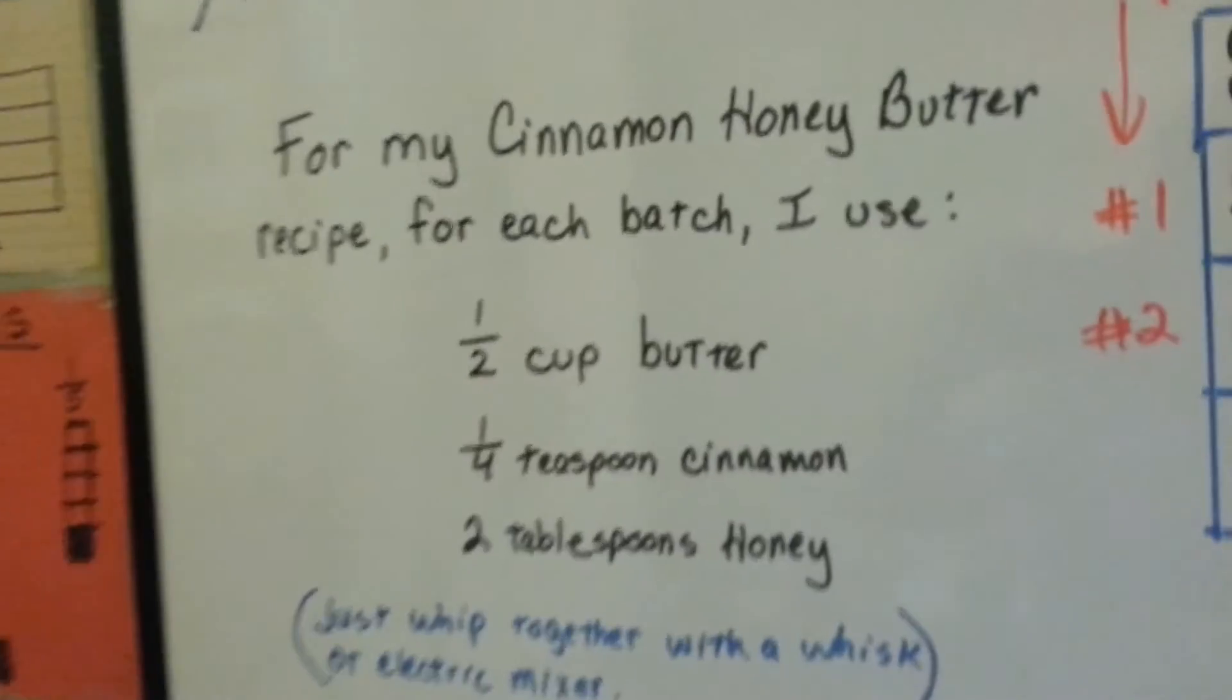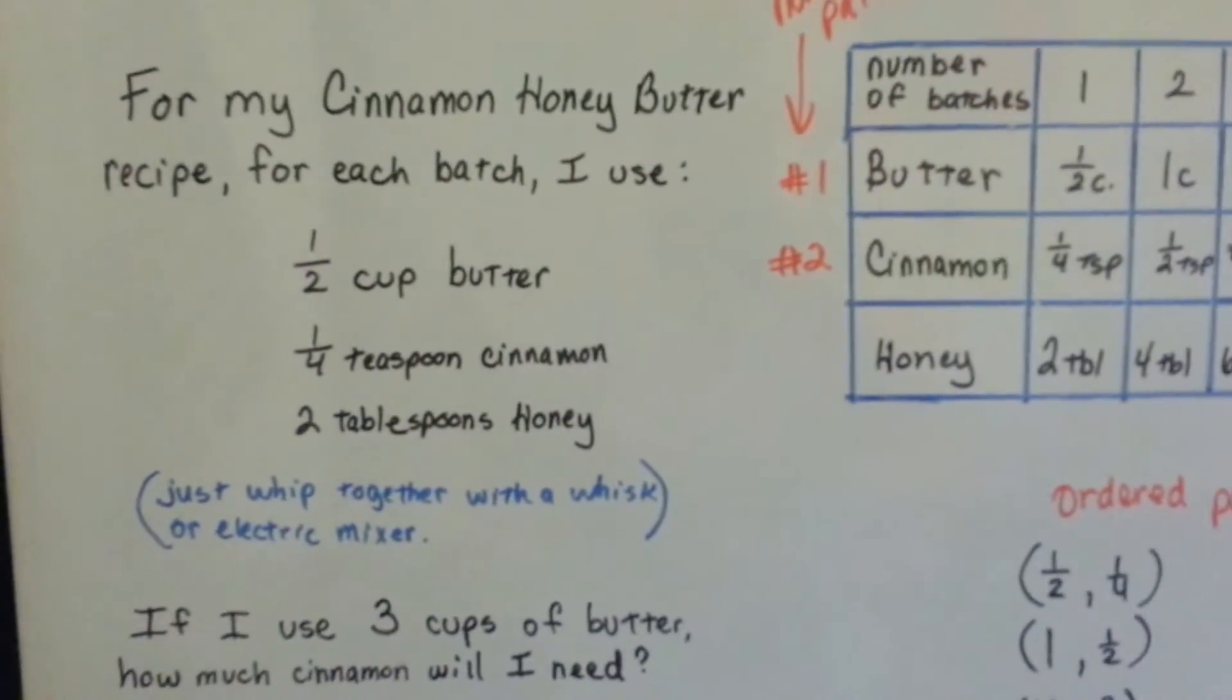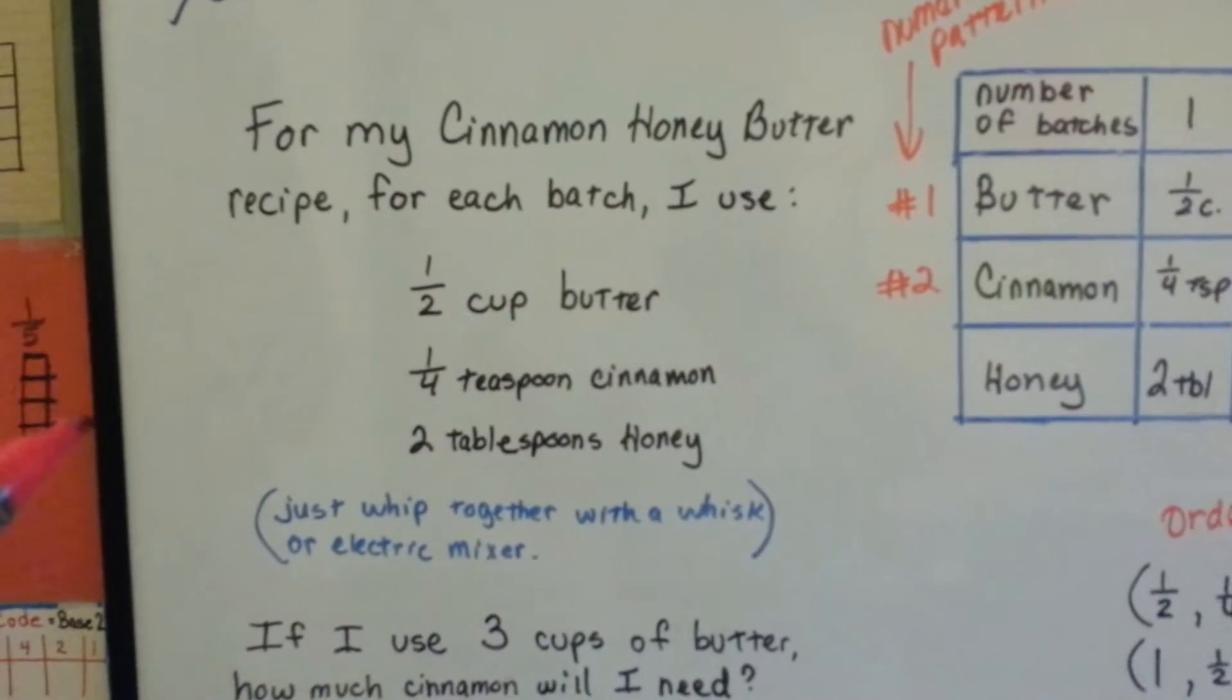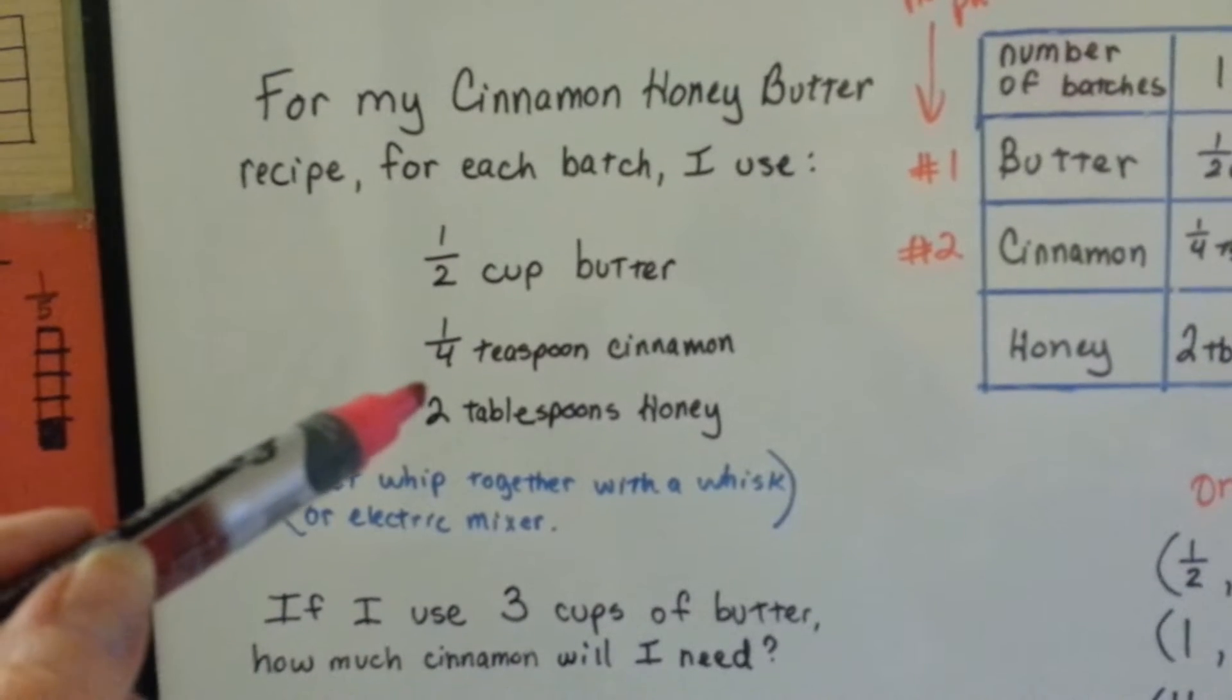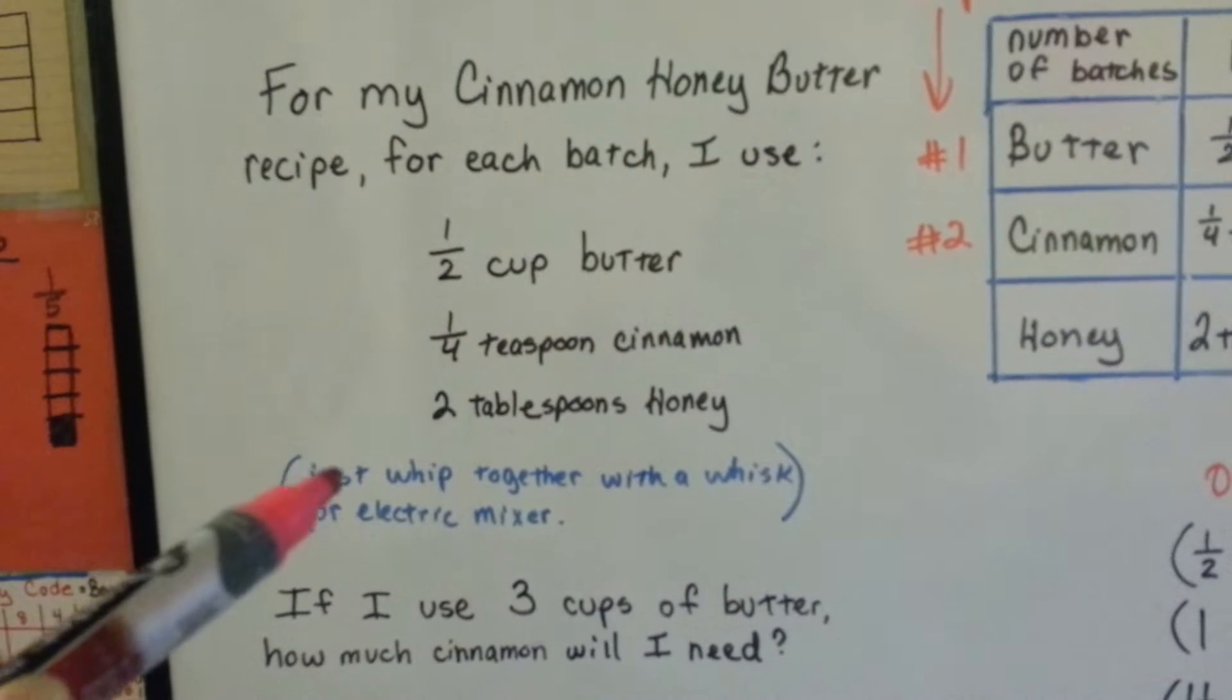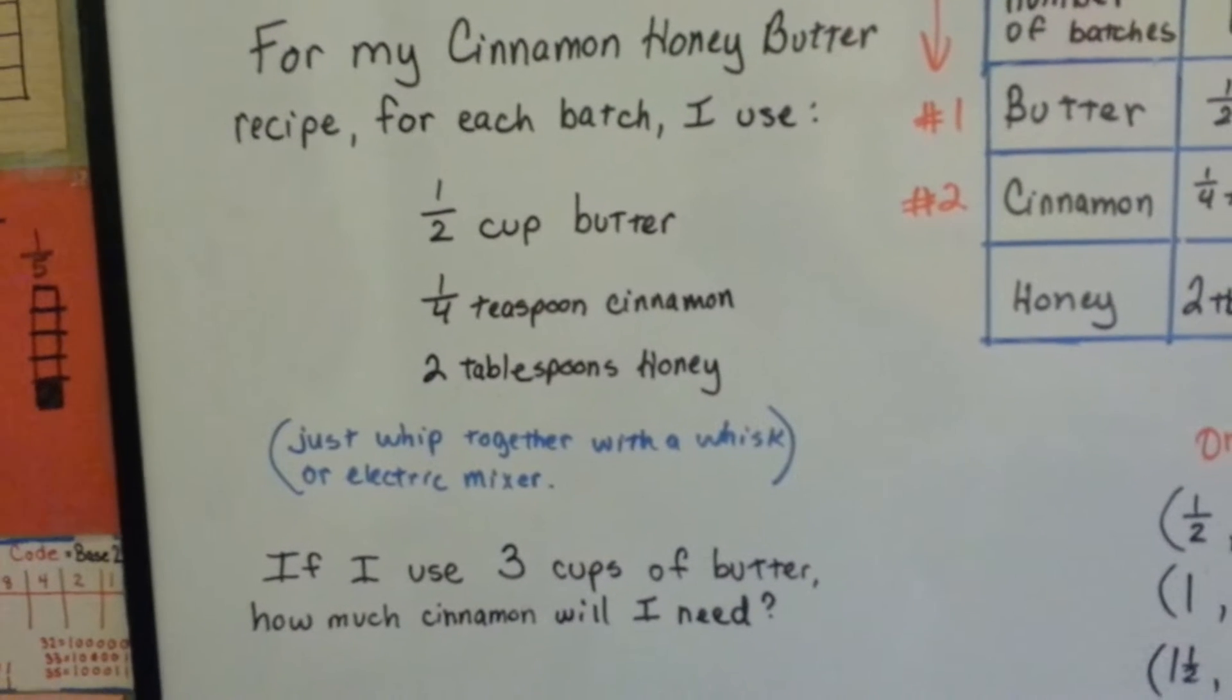We're going to go over my cinnamon honey butter recipe as an example of two numerical patterns, because it's a very easy recipe. For a half cup of butter, we use a quarter teaspoon of cinnamon and two tablespoons of honey. You whisk it together vigorously or use an electric mixer, and it makes a small batch of cinnamon honey butter. Really good on toast and muffins.